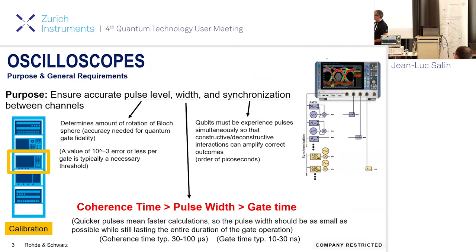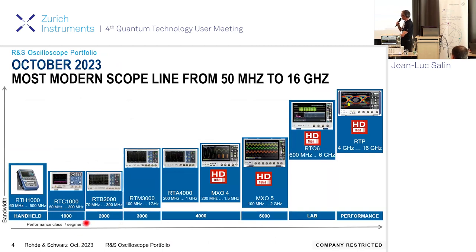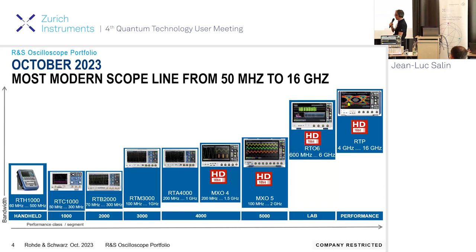Oscilloscopes are used for time domain analysis — characterizing pulses: pulse levels, pulse timing, and synchronization between channels. Rohde & Schwarz has a full portfolio from low-end scopes to the new MXO4 and MXO5 up to 2 GHz, which are brand new. We also have high-end oscilloscopes — the RTP and RTO6 — with up to 16 GHz bandwidth, and Rohde & Schwarz is working on even higher bandwidths.